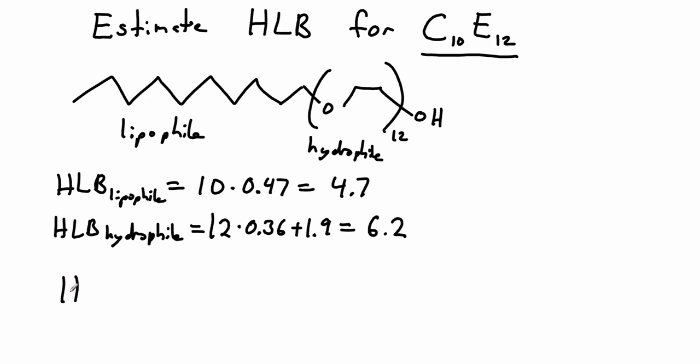So the overall HLB for our molecule is going to be 7, which is the base value, plus our HLB hydrophile, which is 6.2, minus the HLB lipophile. And we end up with a value of 8.5. We expect that 8.5 is going to be something that will stabilize an oil in water emulsion.